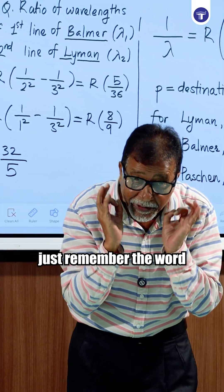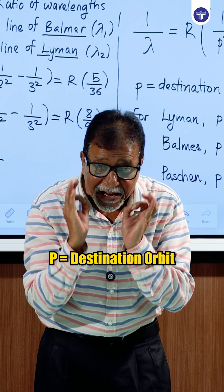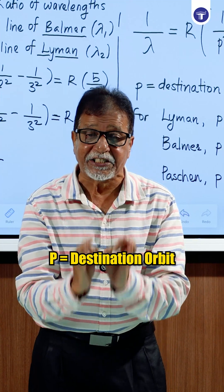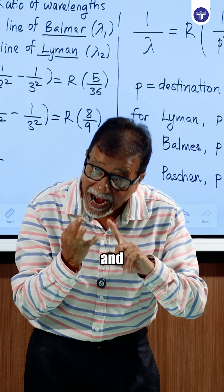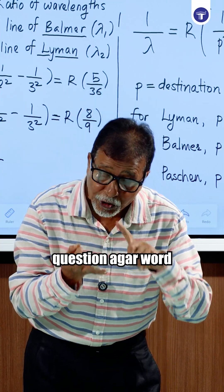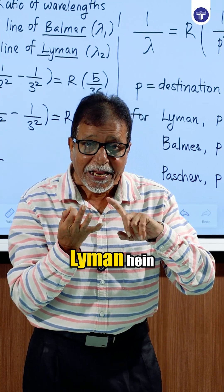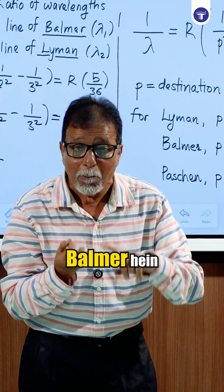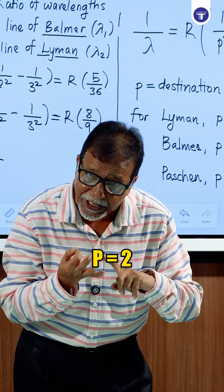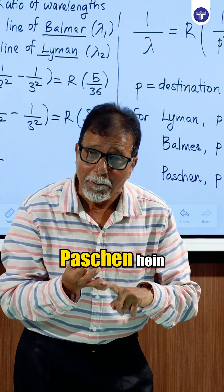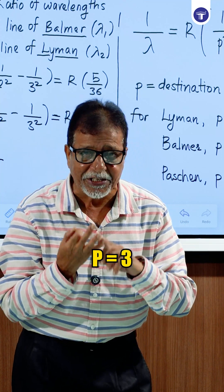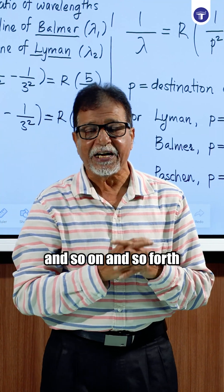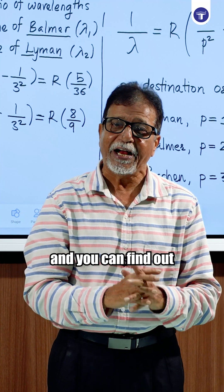Just to recap: P stands for the destination orbit. For Lyman, P equals 1. For Balmer, P equals 2. For Paschen, P equals 3, and so on. You can find out the wavelengths accordingly.